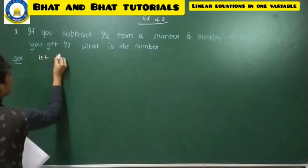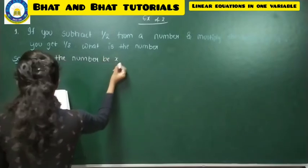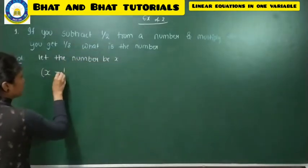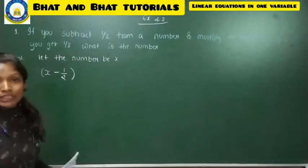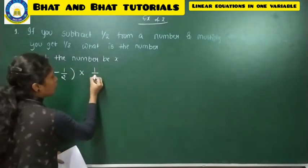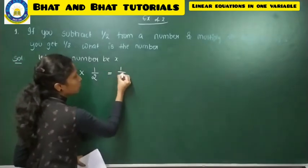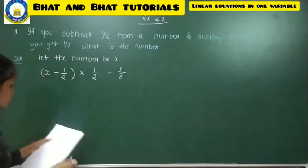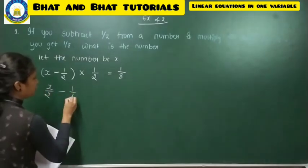We'll see the solution. Since we don't know the number, let the number be x. According to the question, subtract 1/2 from the number x, then multiply the result by 1/2, and that equals 1/8. So our equation is: (x − 1/2) × 1/2 = 1/8. To simplify, x/2 − 1/4 = 1/8, making the denominator the same.